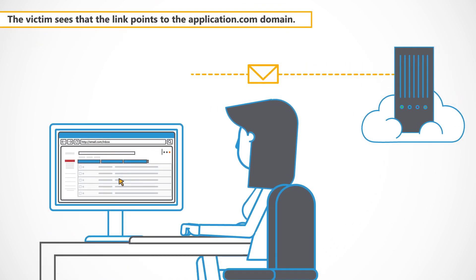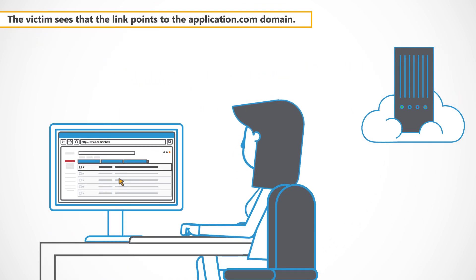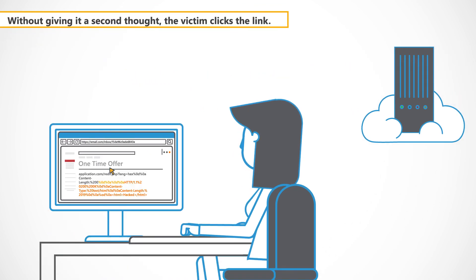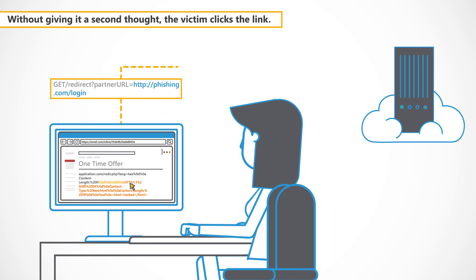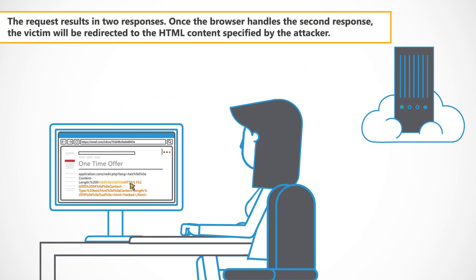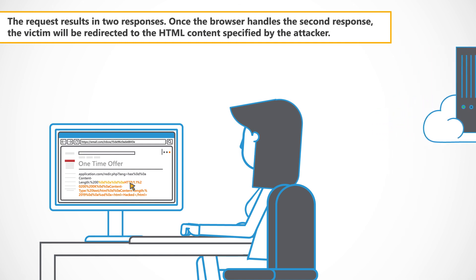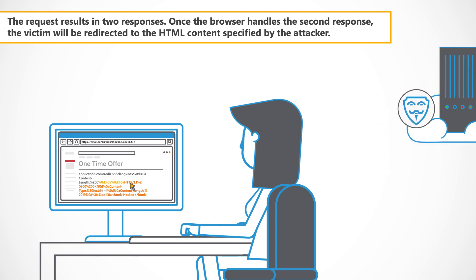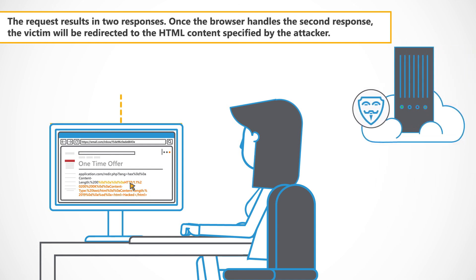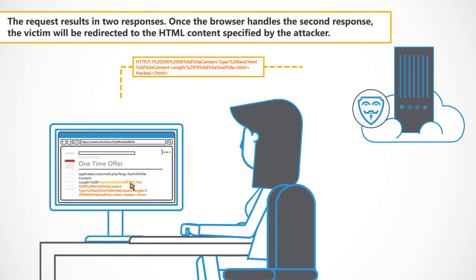The victim sees the link points to the application.com domain. Without giving it a second thought, the victim clicks the link. The request results in two responses. Once the browser handles the second response, the victim will be redirected to the HTML content specified by the attacker.